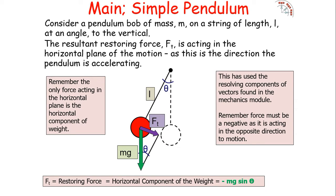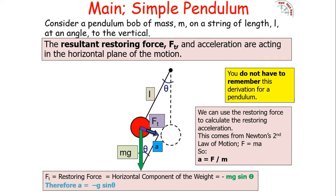Since the only horizontal force acting is the weight, we can say it's the restoring force. Resolving the weight into its horizontal component gives mg sine theta. This force must also be negative because it's acting in the opposite direction to motion, so the restoring force equals minus mg sine theta. We also know that acceleration equals F over m from Newton's second law, which the simple harmonic oscillator obeys.